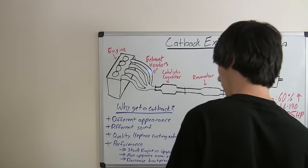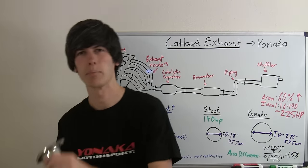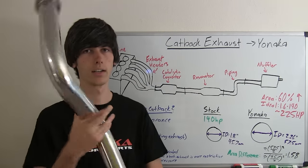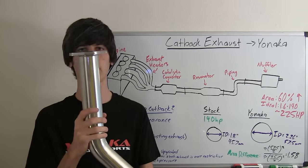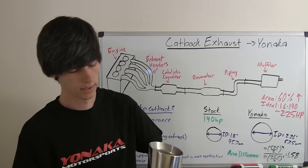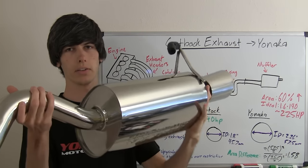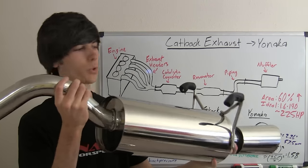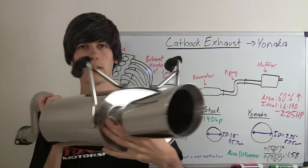The next step we have is the piping which goes through the center and passes along through. And finally after we go through the piping, we're going to get to the muffler, and the exhaust will travel out and then head out the tailpipe.